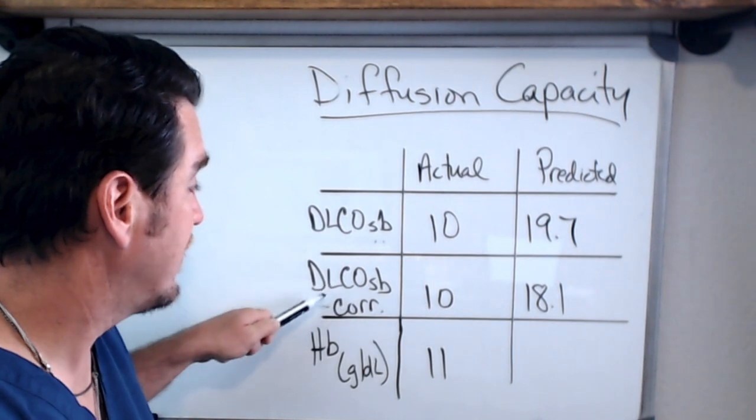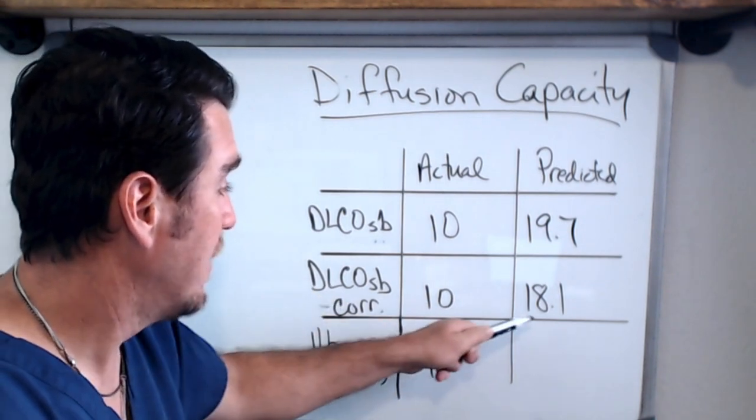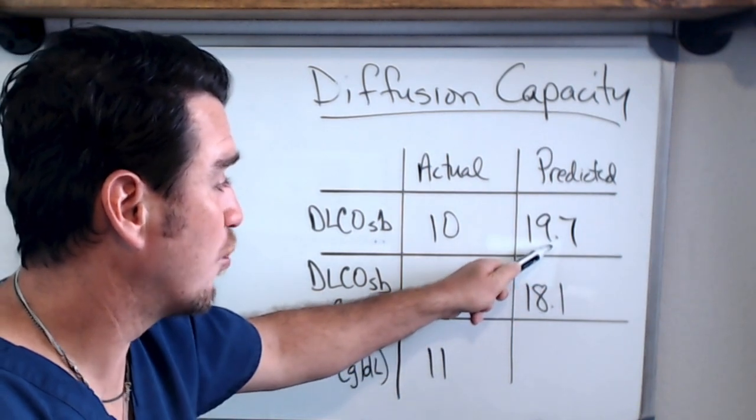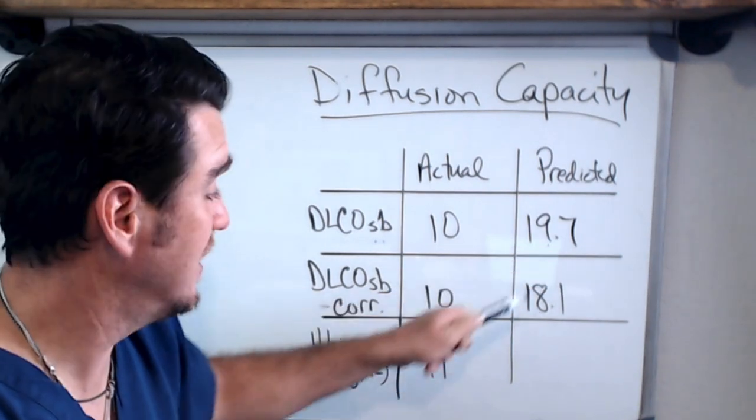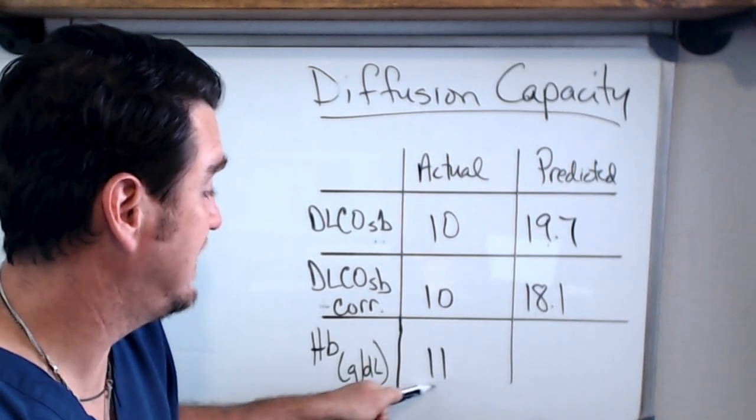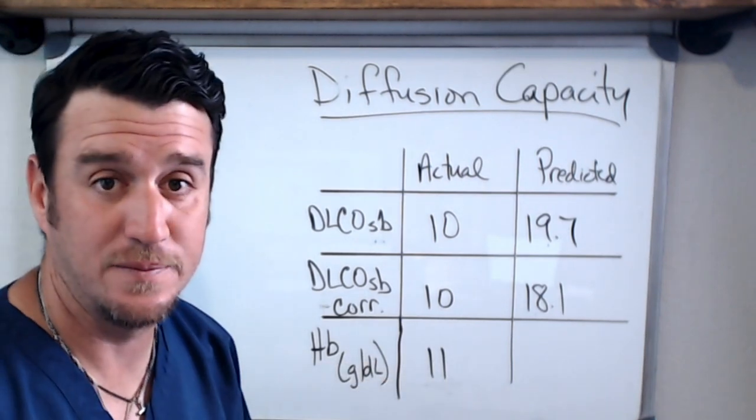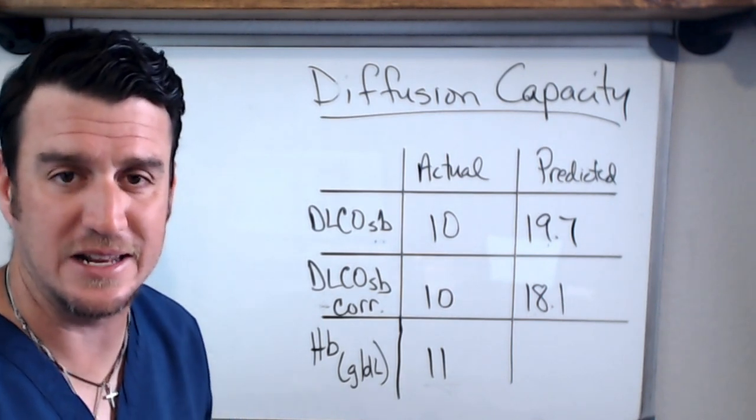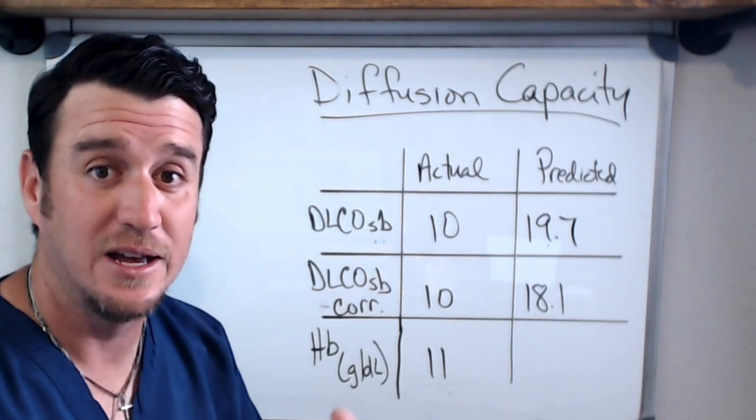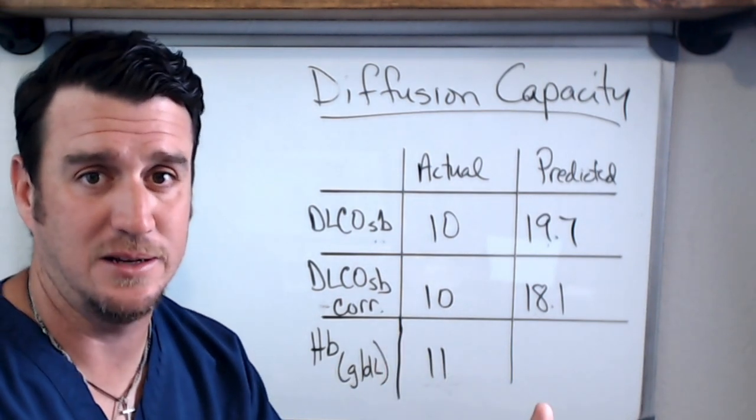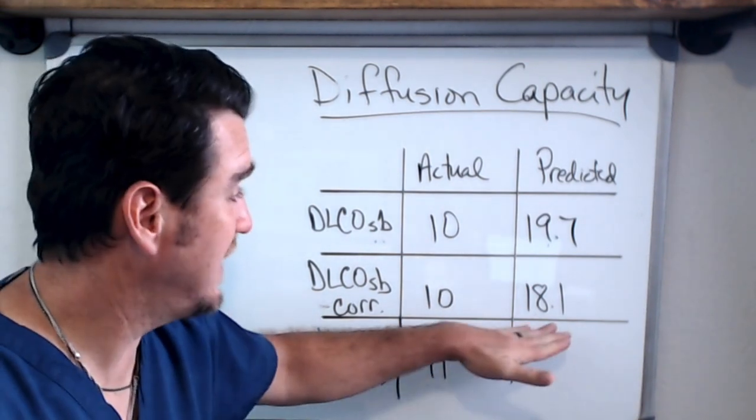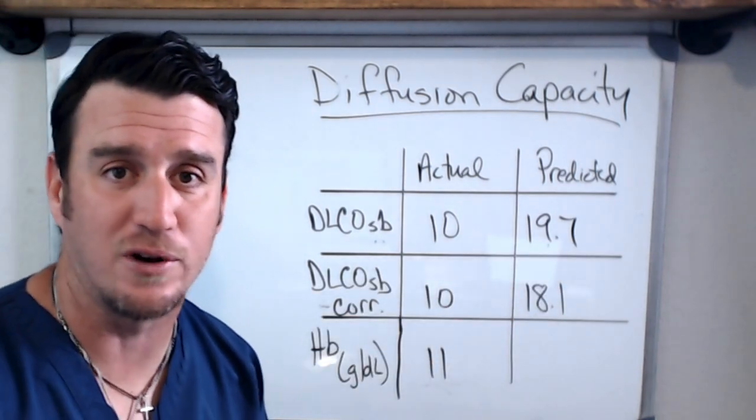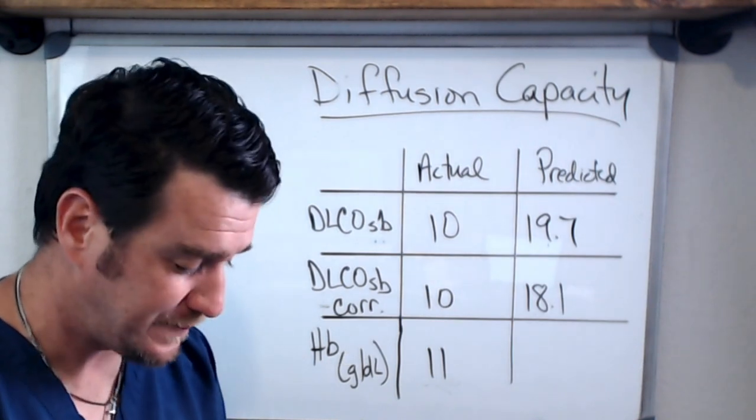Now if you notice, the corrected predicted is lower than the original predicted, and the reason that is is because this patient is indeed anemic. This person's hemoglobin is 11. Now we understand that that's decreased which is going to affect their diffusing capacity, so you can see their predicted goes down. Now when we do this math, we do it the same way we did the math for lung volumes and for spirometry.